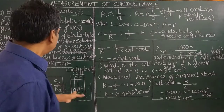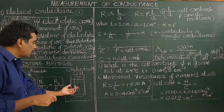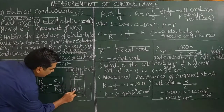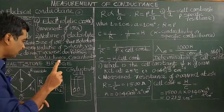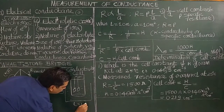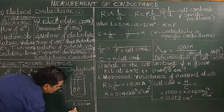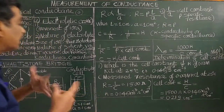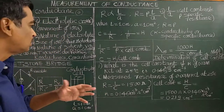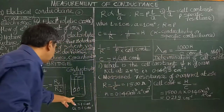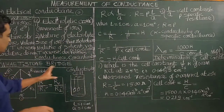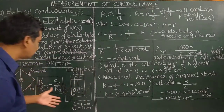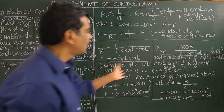This is the conductivity cell connected to the conductivity bridge. The conductivity cell has two electrodes. The distance between the two electrodes is L = 1 centimeter, and the area of the electrode is A = 1 centimeter square. The solution for which the conductance is measured is placed in it. Conductance G = 1/R.